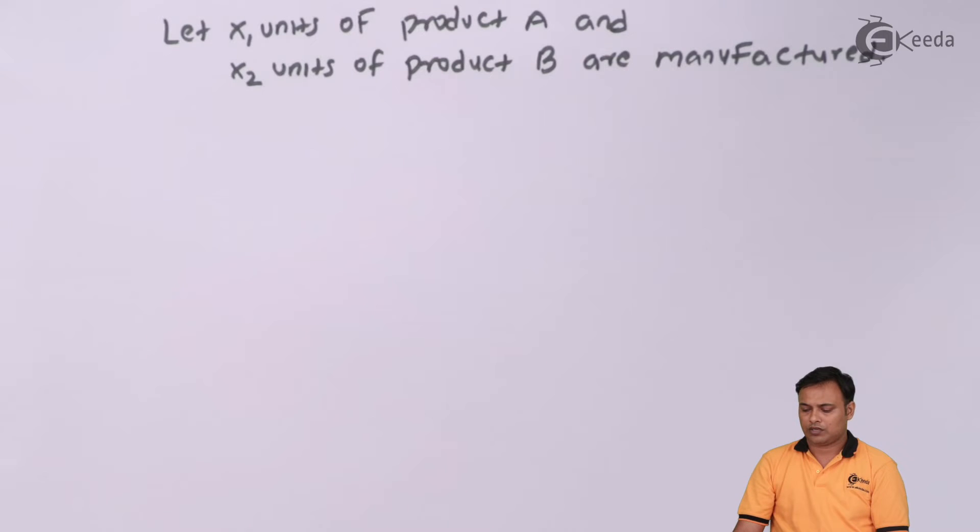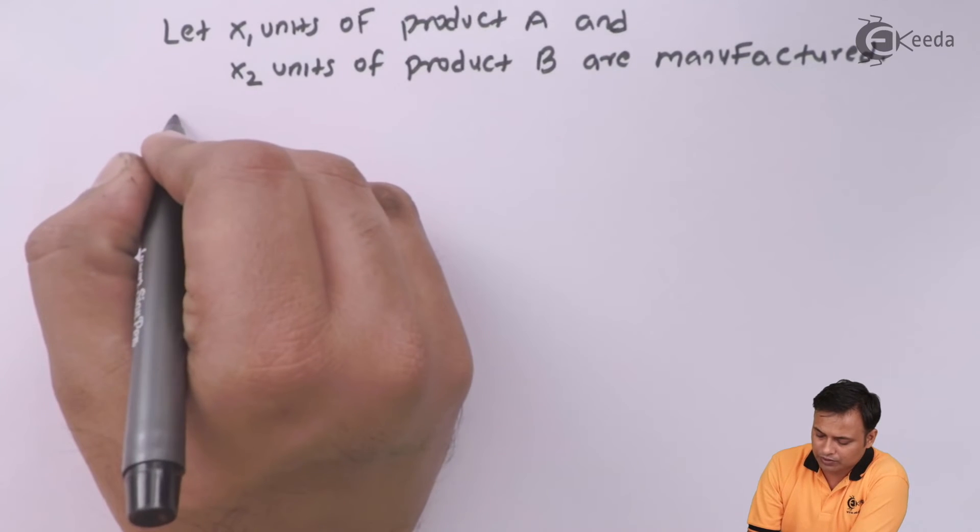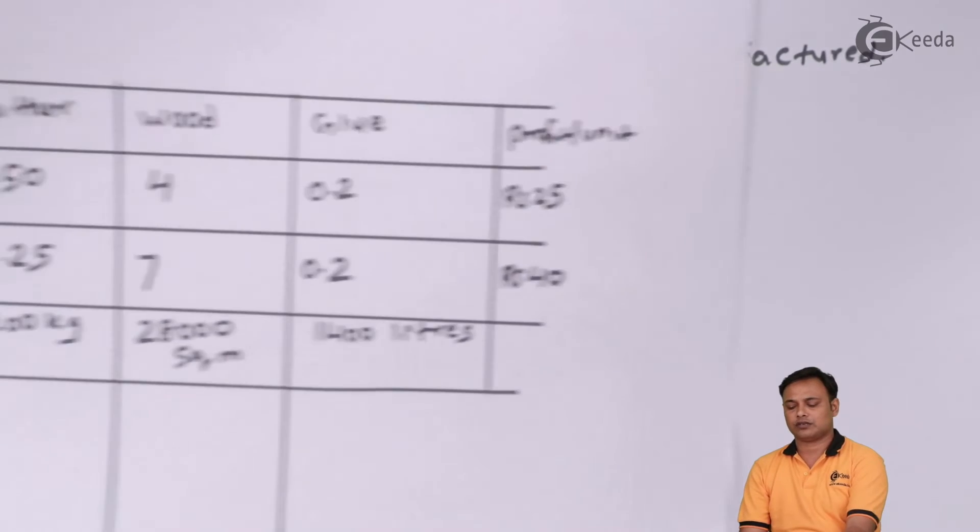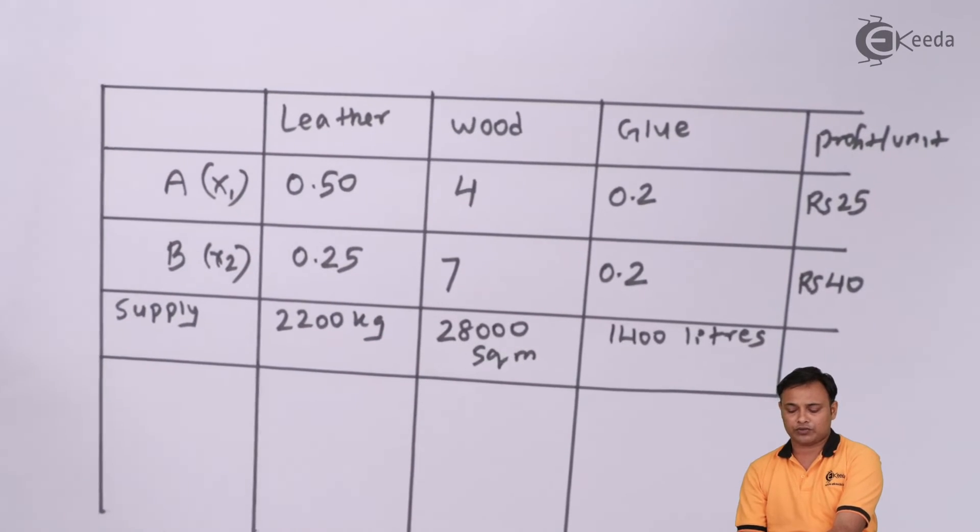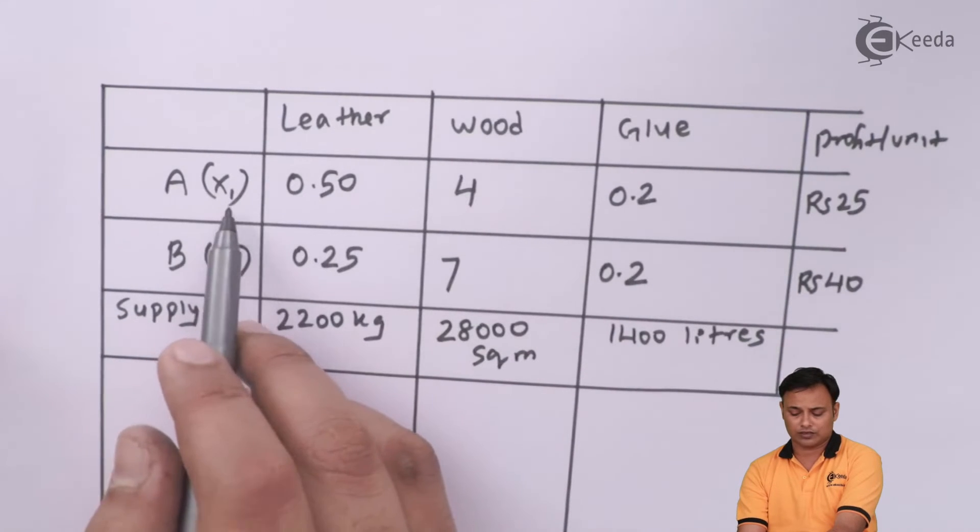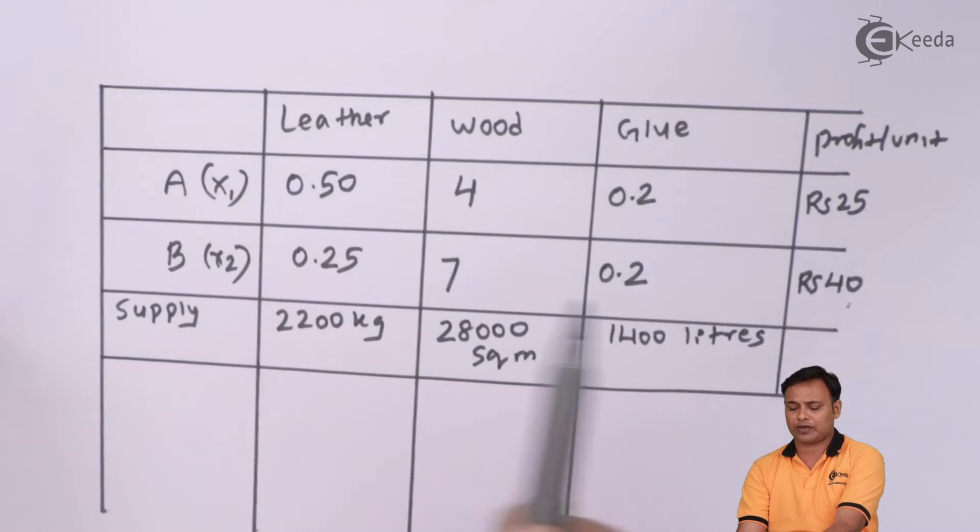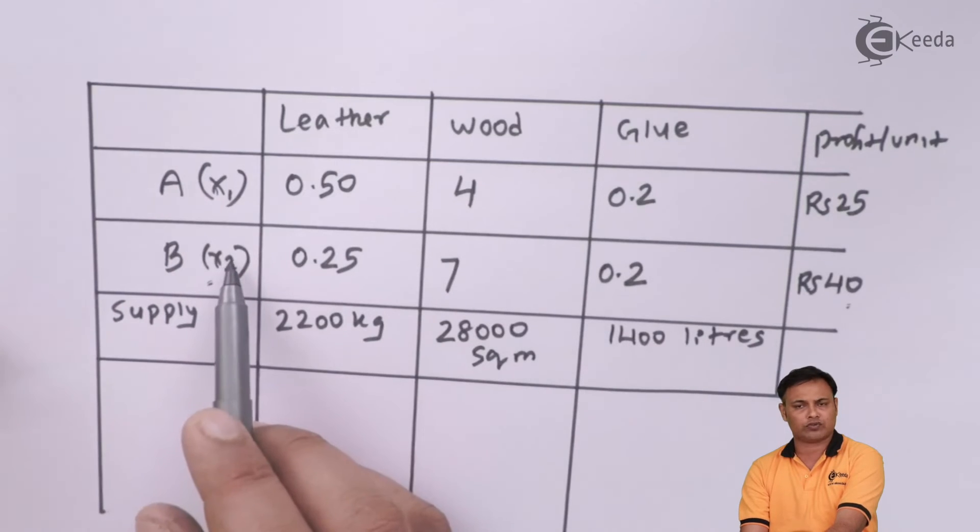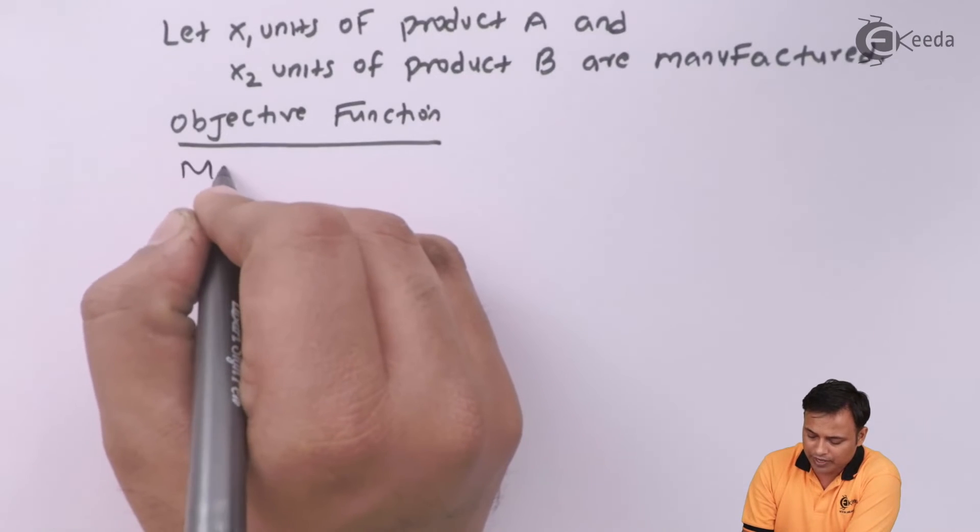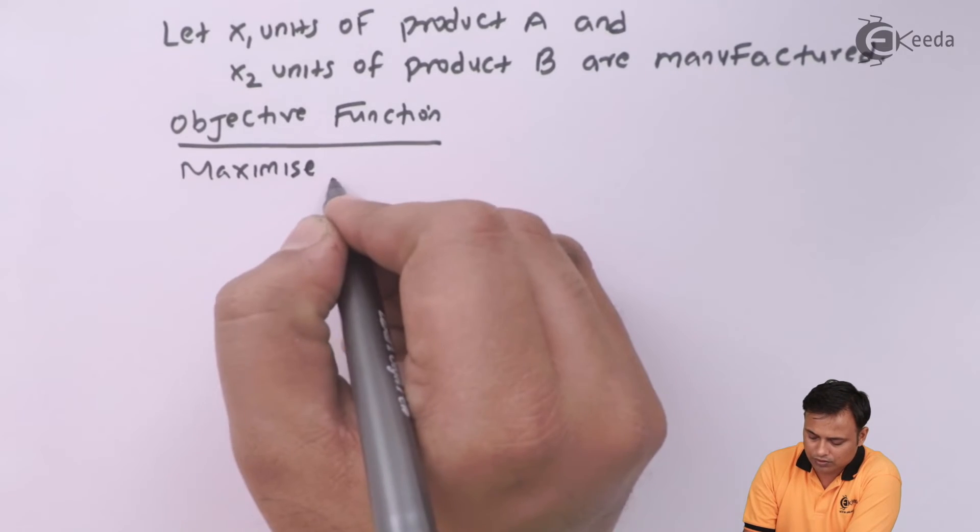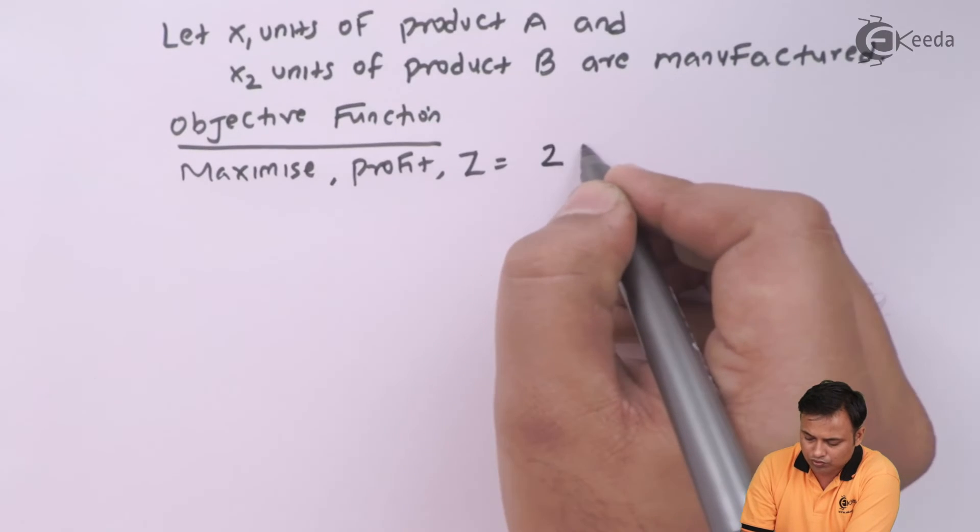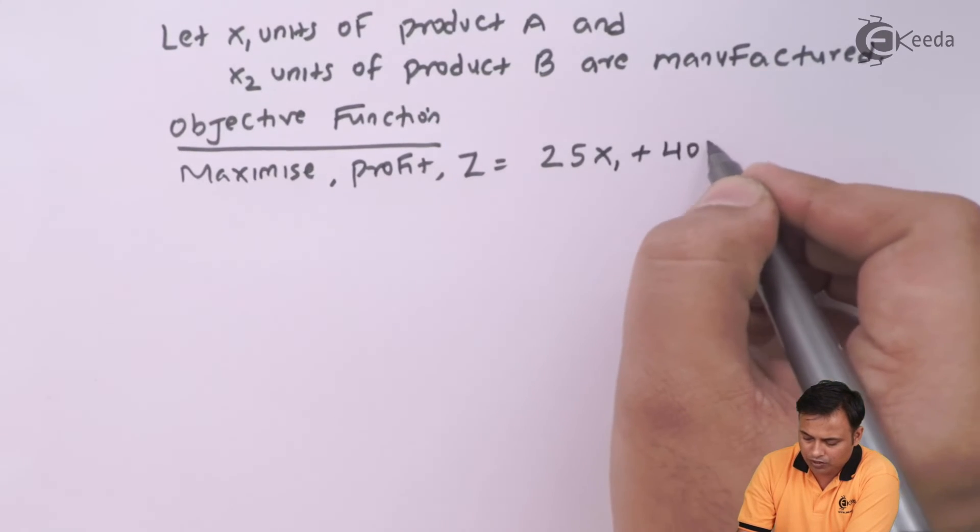This is my basic assumption. Now, the next part will be objective function. My profit per unit for A is 25 into number of units x1. My profit per unit for B is 40 multiplied by number of units x2. I need to maximize the profit. So, 25x1 plus 40x2 will be my total profit. Maximize profit, z equals to 25x1 plus 40x2.